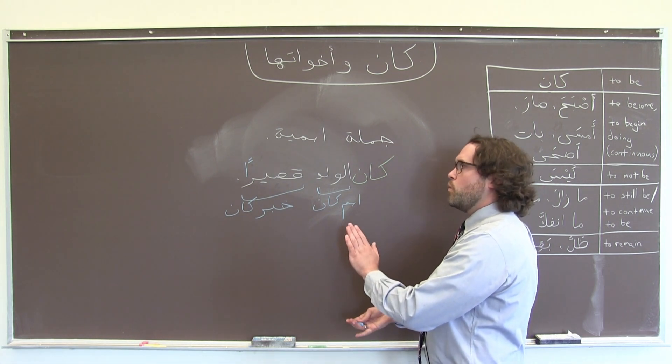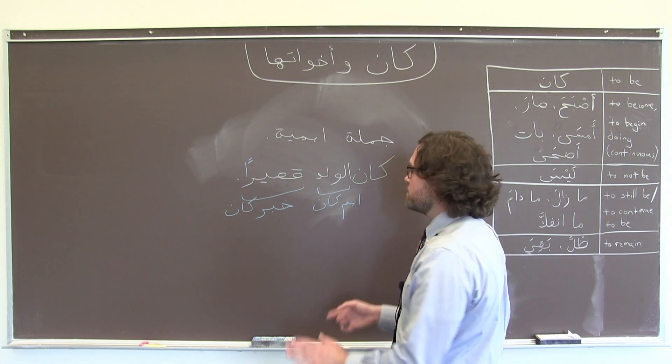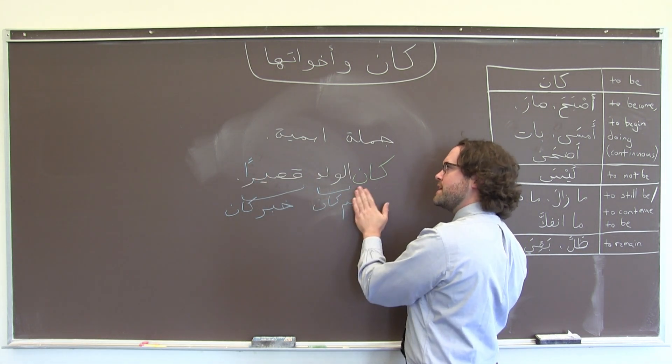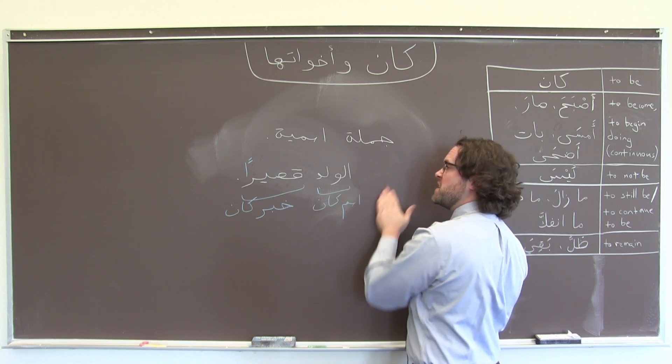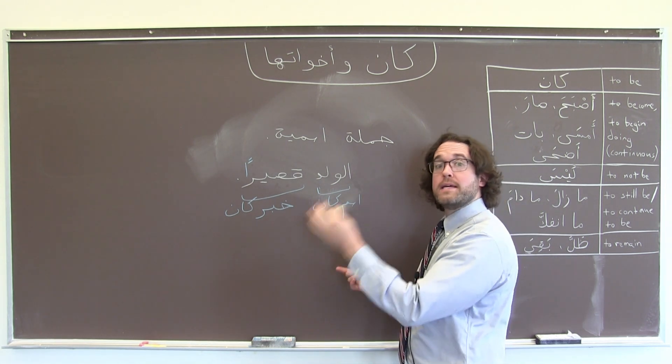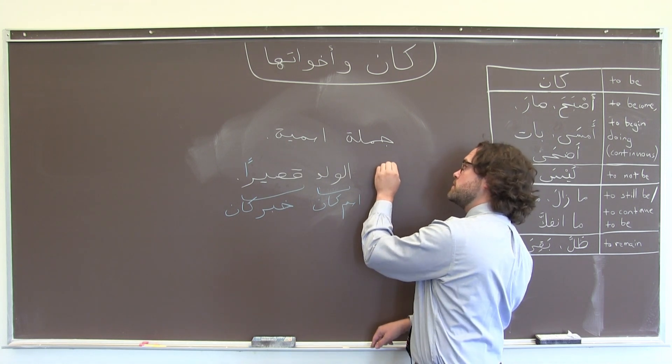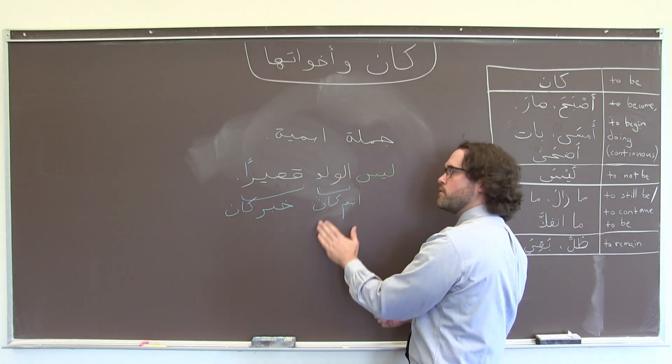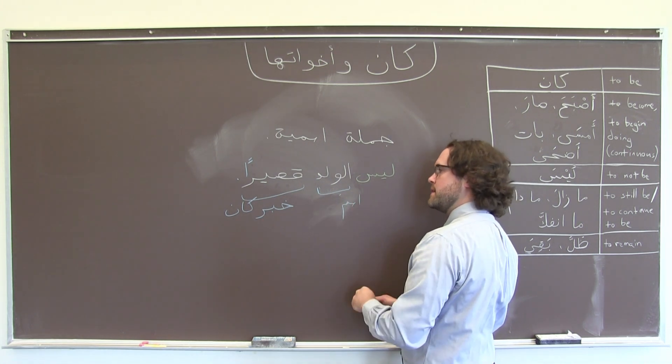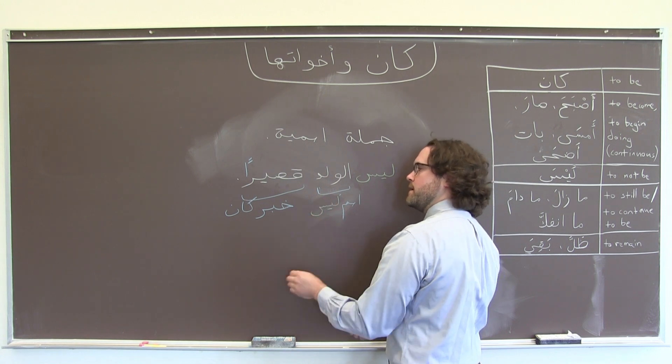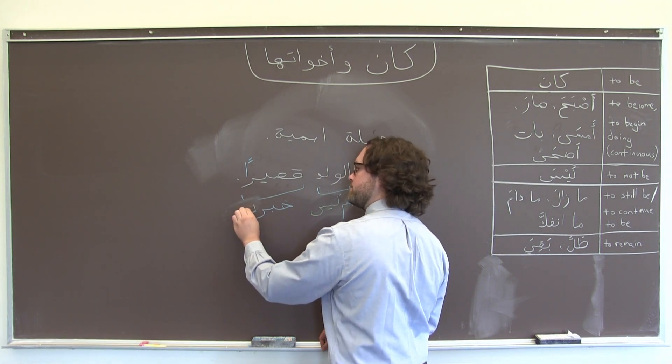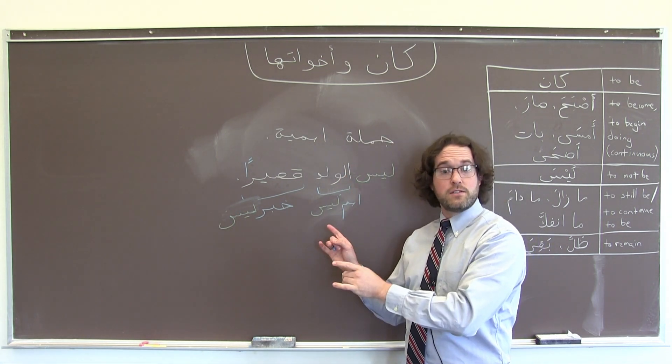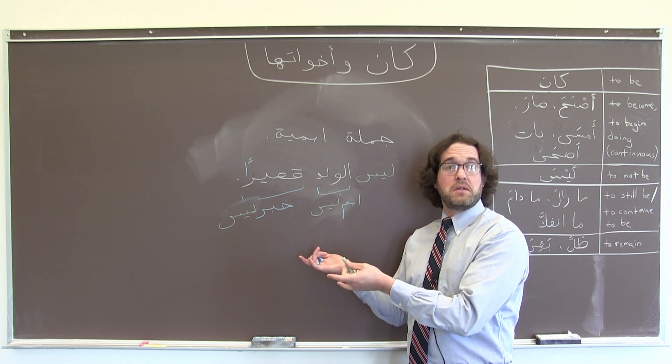If we wanted to say instead, the boy is not short, the terminology would remain pretty much the same, and the rules would stay the same. But instead of كان, we could negate this with ليس, the boy is not short. And then instead of saying اسم كان and خبر كان, we would refer to these specifically as اسم ليس, and خبر ليس. But the process and the ideas remain essentially the same.